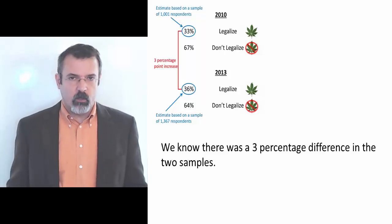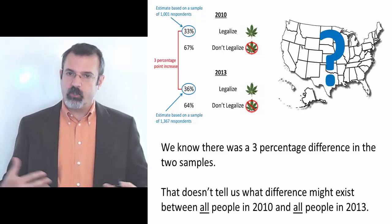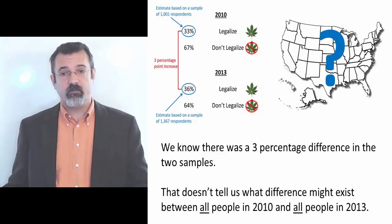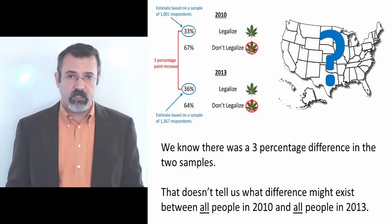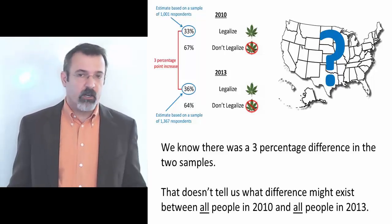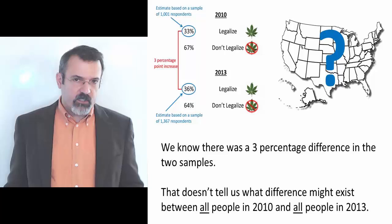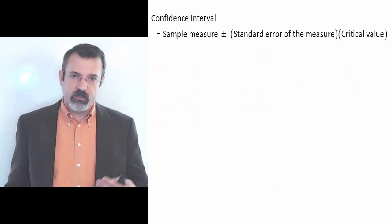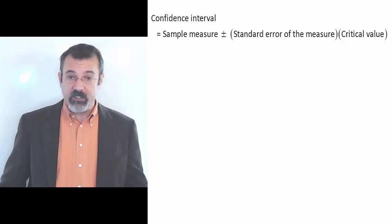What we really want to know is how all Americans' perceptions of marijuana legalization have changed from 2010 to 2013. And of course, there's no way to know this without polling every single American in both years. So what we can do instead is to construct a confidence interval based on the sample of respondents that we did observe.